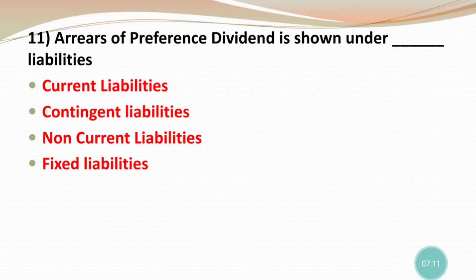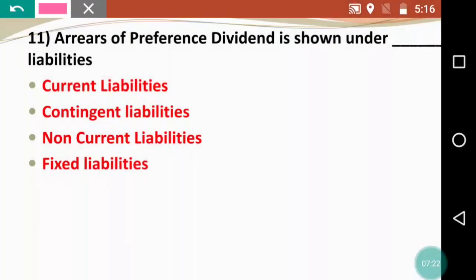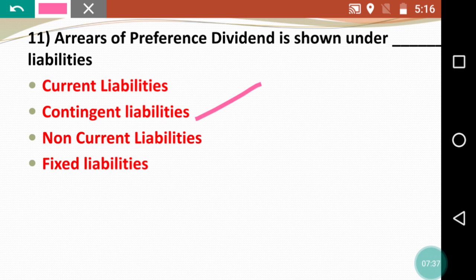Question 11: Arrears of preference dividend is shown under dash liabilities. Options are current liabilities, contingent liabilities, non-current liabilities, or fixed liabilities. Arrears of preference dividend is a contingent liability — so contingent liabilities is the correct answer. Arrears of preference dividend is shown under the contingent liabilities head.